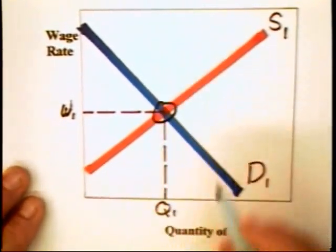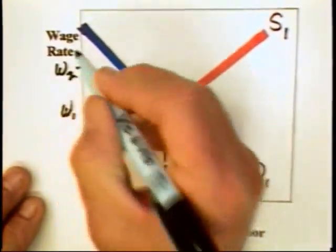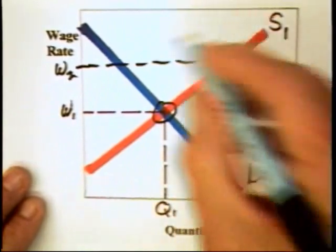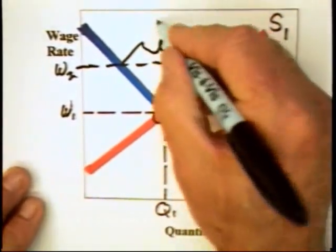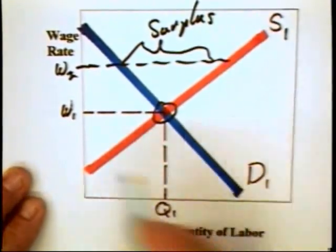We know that the wage rate in the competitive market is going to move to that level because if, in fact, you have a wage above W1, you're going to have a surplus of labor, and the labor is going to fall.